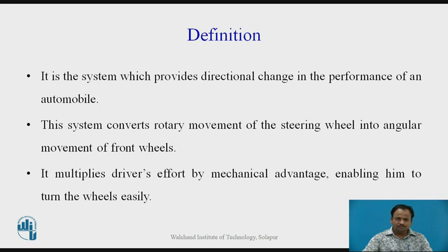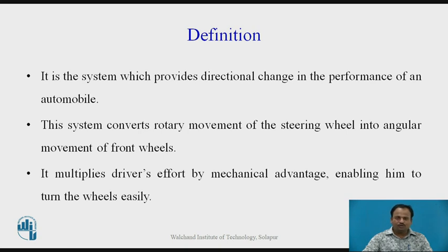Definition: It is the system which provides directional change in the performance of an automobile. This system converts rotary movement of the steering wheel into angular movement of the front wheels. It multiplies the driver's effort by mechanical advantage, enabling him to turn the wheels easily.